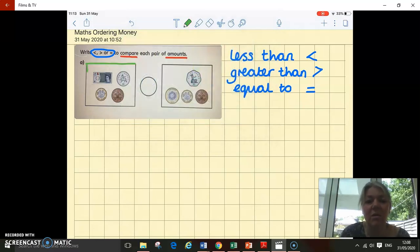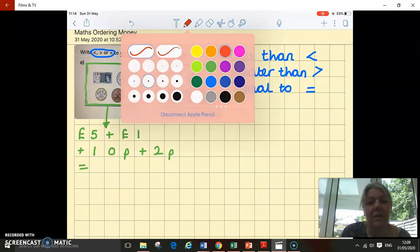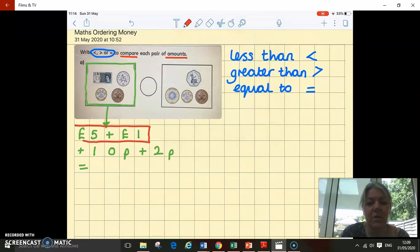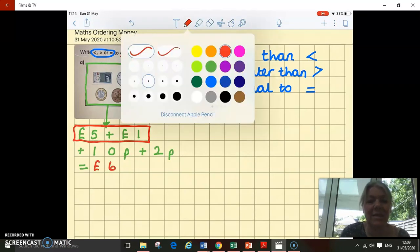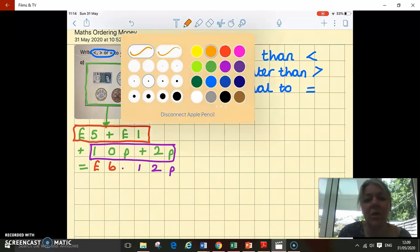Before we can even start, we're going to have to calculate the total in this first box. So I can see I've got a £5 note, I've got a £1 coin, a £10 coin, and a £2 coin. So to add them together, I'm going to add the pounds first: £5 and £1 equals 6, and then add my pence: 10 add 2 equals 12 pence. So in total here, I've got £6 and 12 pence.